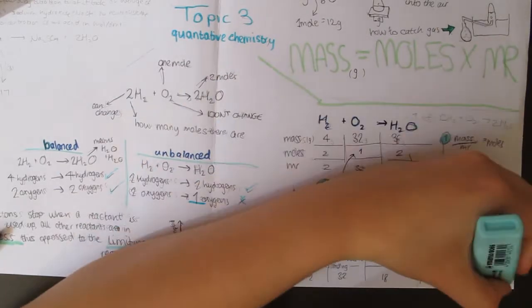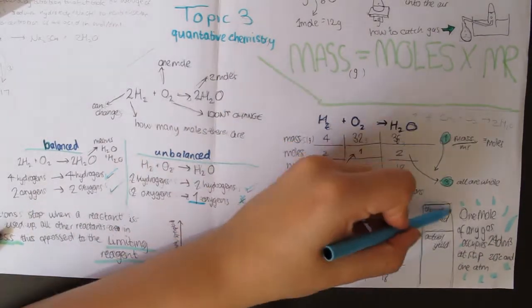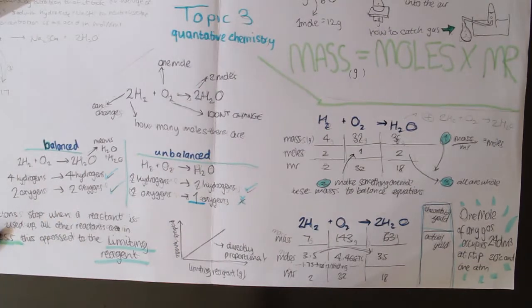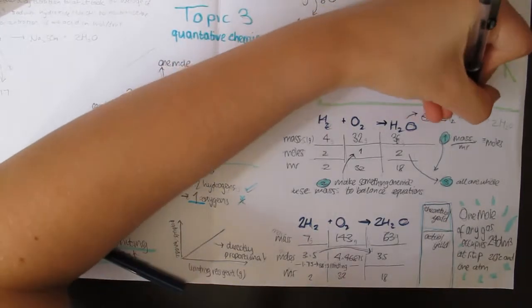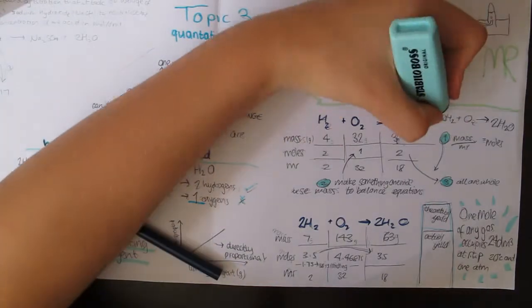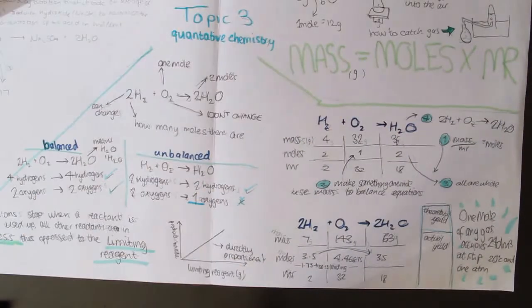An example of this is chlorine. 35.5 grams of chlorine is one mole, so at RTP will be 24 decimetres cubed. This can also be used in equations between gases to find volumes, and can thus be used in concentration equations.